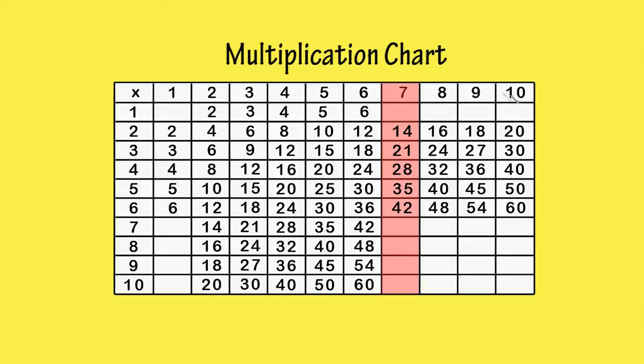We can start by filling in the blank boxes in the 7th column. 7 times 1 is 7. The next 5 boxes are already filled in from when we did the other times tables, so there's less and less new information that needs to be filled in.